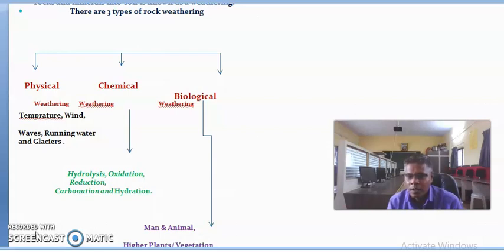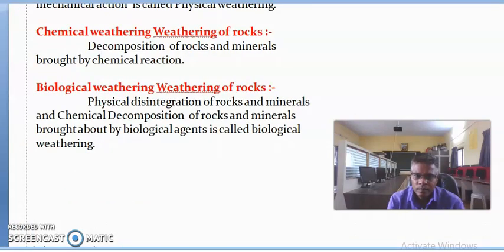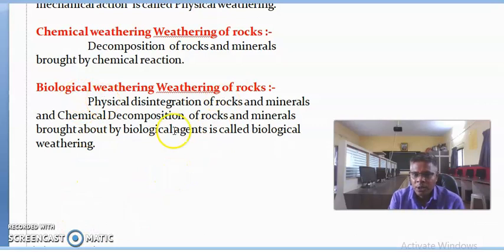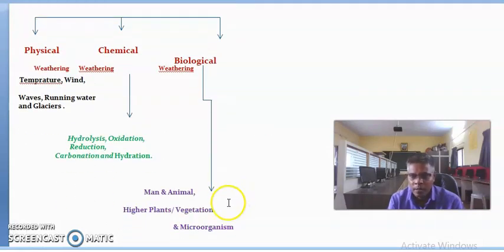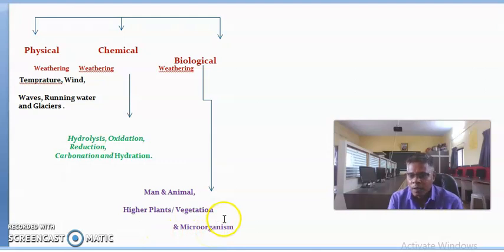Lastly, we study biological rock weathering. Biological rock weathering is defined as the physical disintegration and chemical decomposition of rocks and minerals brought about by biological agents. The following biological weathering agents are studied: number one, man and animals; number two, higher plants, also known as vegetation; and number three, microorganisms. These biological weathering agents make the rock weatherable.